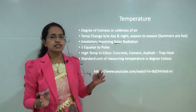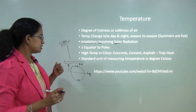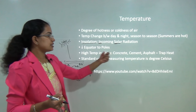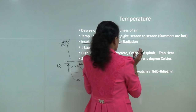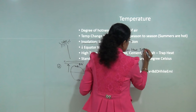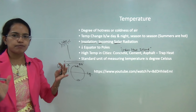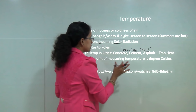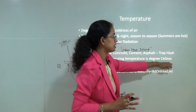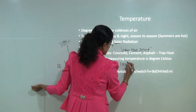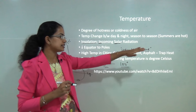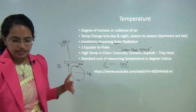Urban areas are said to have higher temperatures because of cemented roads, asphalt, concrete, and the cement of buildings — all of which trap heat, leading to the formation of what is known as an urban heat island. The unit for measuring temperature is degrees Celsius, Kelvin, and Rankine, with Celsius being most commonly used. Celsius ranges from 0°C (freezing point) to 100°C (boiling point), and this unit was named after Anders Celsius.